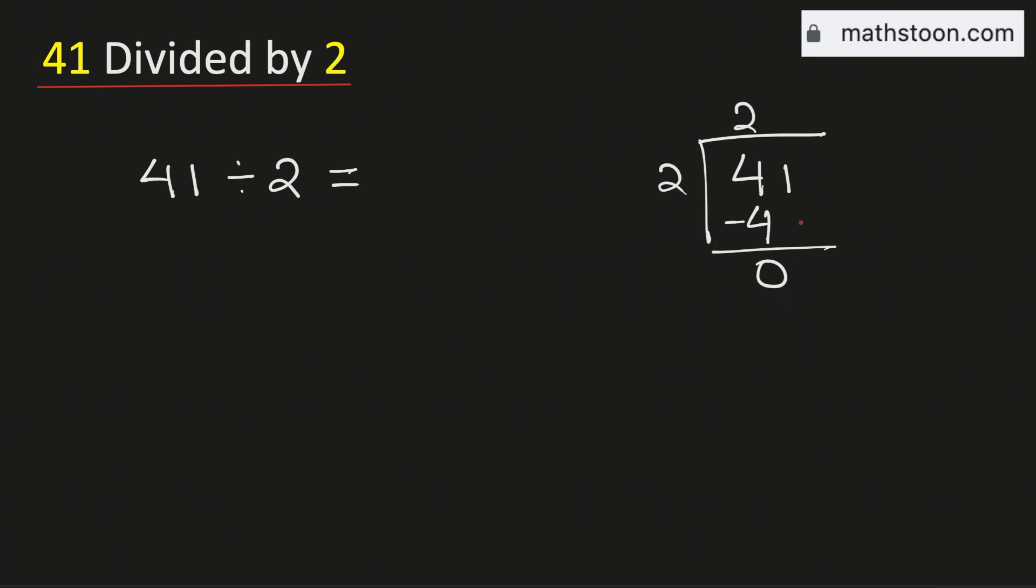As 2 cannot go into 0, so we need to bring down this number 1 here. As there is no meaning of zeros on the left, so we will remove it.